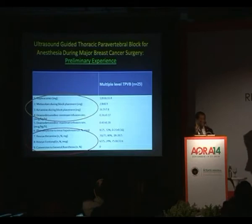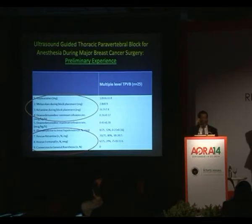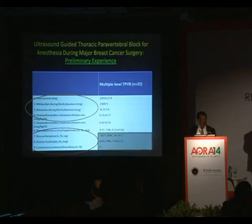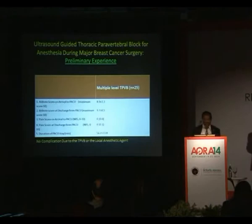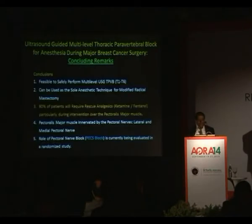They would not complain of pain when operating on the skin or reflecting the upper part, but the moment they use the diathermy to remove the breast tissue from the pectoral muscle and the muscle contracts, the patient starts to feel pain. It can be circumvented by 10 to 20 milligrams of small boluses of ketamine. Once the breast has been removed from the pectoral muscle, the patients do not have pain. So the question is: why are these patients complaining of pain when operating on the pectoral muscles?